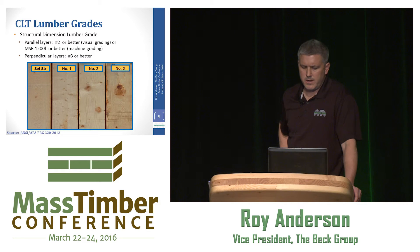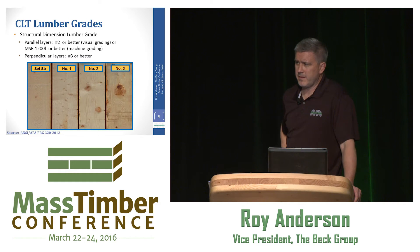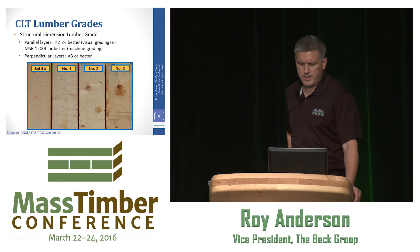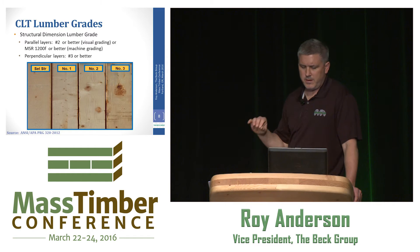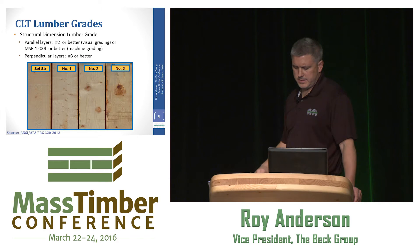Then you have grades to consider. Structural lumber is graded in two ways: visual grading, which is mostly done by machines that scan the lumber and assign a grade, and machine grading, where the lumber is bent and assigned a grade based on its stiffness. For the parallel layers of a CLT panel, you need number two or better for visual-graded lumber, or 1200F or better for machine-graded lumber. In the perpendicular layers, you can use a lower grade — at least a number three.